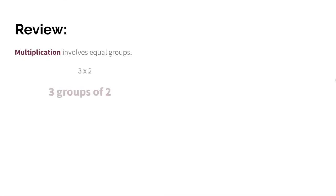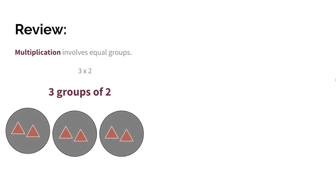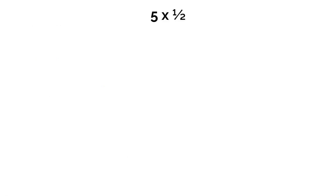For example, 3 times 2 means 3 groups of 2. And this is what it would look like. You have 3 groups of 2. So 5 times 1 half means 5 groups of 1 half. Let's start off by drawing 5 groups of 1 half.